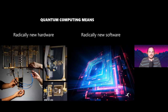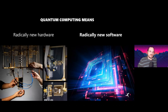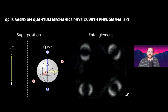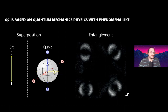Quantum computing is probably going to be the most disruptive technology of the 21st century and will lead to the biggest transformation in computing over the coming decades. Its principles are based on quantum mechanics — the physics discipline describing how our universe behaves at the smallest scale: atoms and subatomic particles like photons and electrons. At these smallest dimensions, certain phenomena occur: first, superposition, and second, entanglement.